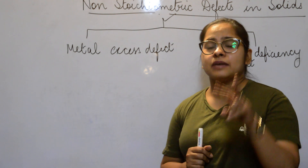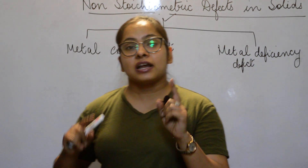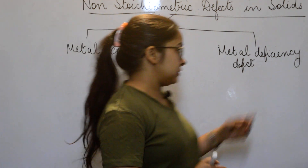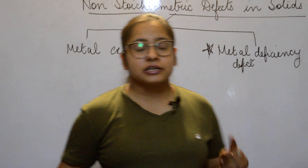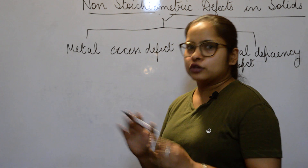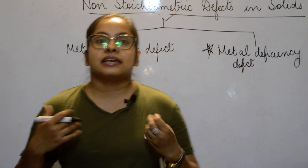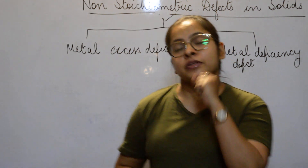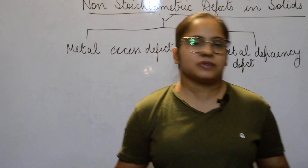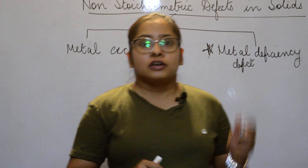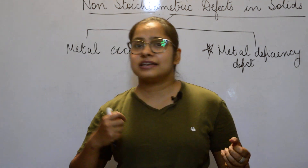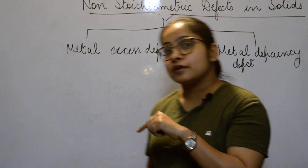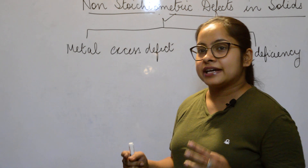We can sum up that there are two reasons accountable for causing metal excess defect. First, the anion may be absent — causing anionic vacancies. The second reason is extra metal cations: since cations are small in size compared to anions, they can sit in interstitial sites.